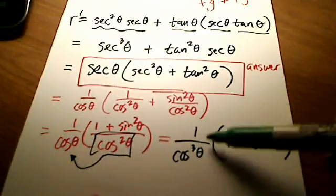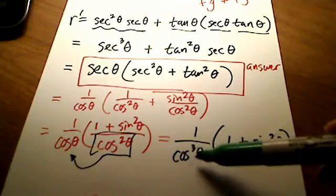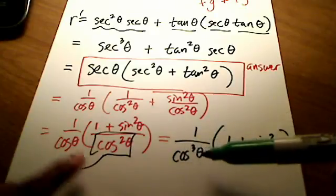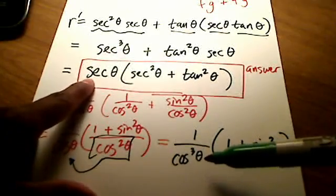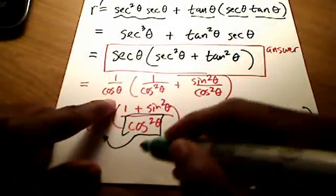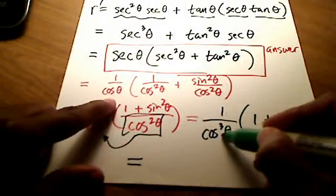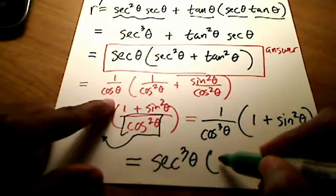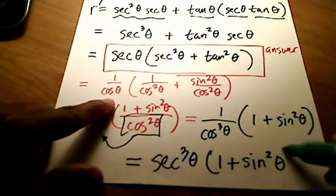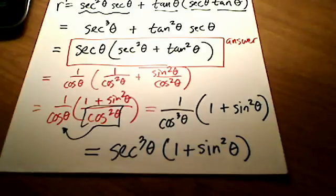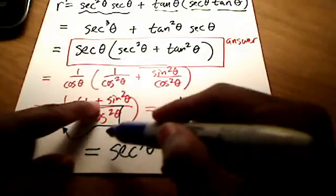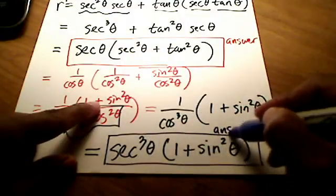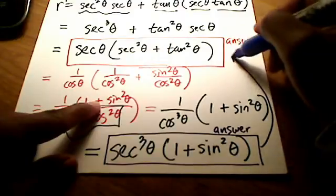Now let's take this one over cosine cubed theta and reciprocate it — flip it over. The reciprocal of cosine is secant, so we can write this final answer as secant cubed theta times the parentheses of one plus sine squared theta. So I've got another form of the exact same answer. This answer is the same as that answer, just in a slightly different form.